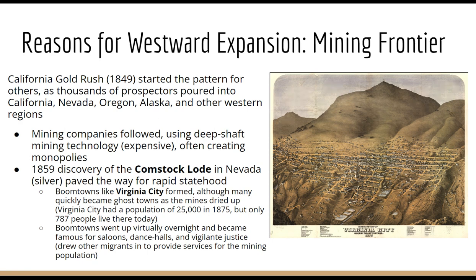As we already discussed, the California gold rush in 1849 really started the pattern for other gold rushes and strikes. Thousands of prospectors poured into California, Nevada, Oregon, Alaska, and many other western regions like Colorado, looking to prospect a strike, mostly for gold and silver especially.